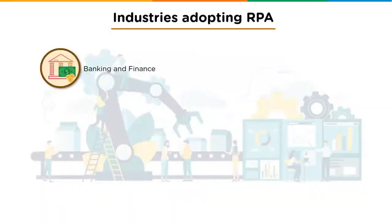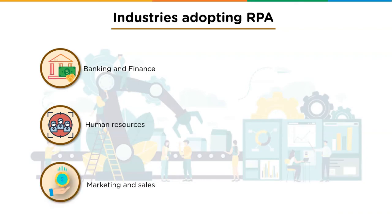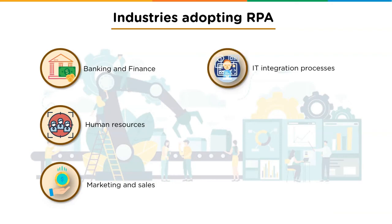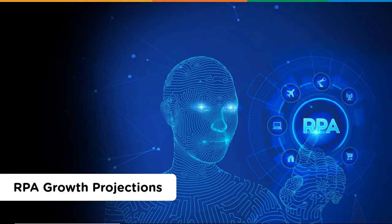Industries adopting RPA include: banking and finance, where RPA has had significant impact reducing work volumes; human resources, where high-volume repetitive HR tasks benefit from improved efficiency and cost-effectiveness in talent acquisition and learning functions; marketing and sales, helping build sales pipelines; IT integration, connecting legacy and newer systems; insurance agencies, building high-growth responsive businesses; and customer relationship management, keeping CRM data up-to-date automatically.